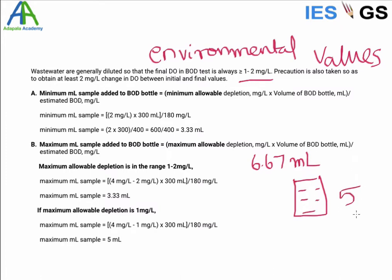So fifth day only we will measure the oxygen level, right? If it is consumed, if the value is becoming zero before the fifth day, there is no mechanism to know at what time the oxygen level has become zero. So we cannot get the correct value.